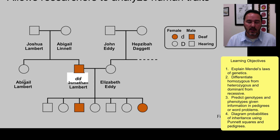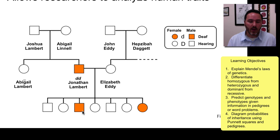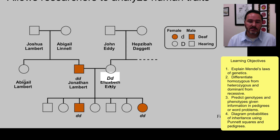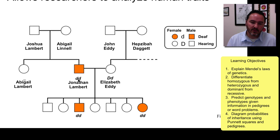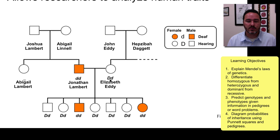Elizabeth is hearing, so she has at least one big D. Looking at their children, we see they have children who are also deaf — little d, little d — so Elizabeth has to be big D, little D, because these children get one allele from dad and the other from mom, so mom must also have a little d. The rest of the hearing children are getting a little d from dad and the big D from mom, so they're all big D, little D.